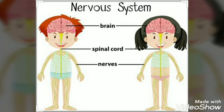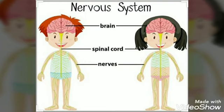Now let us start with the nervous system in vertebrates. The nervous system in vertebrates is composed of nerves which connect their central nervous system. The central nervous system comprises the controlling panels, which are the brain and spinal cord. The nerves are composed of nerve fibers — the nerve cells called neurons. Neurons form the basic unit of the nervous system. The messages conducted by nerves are in the form of electrical impulses.